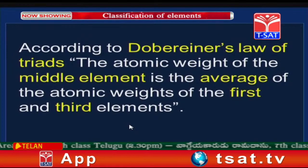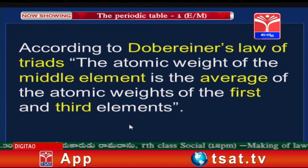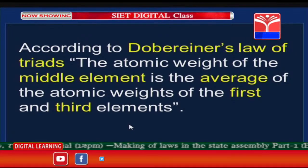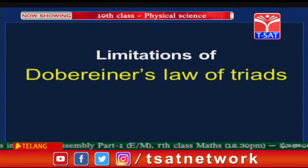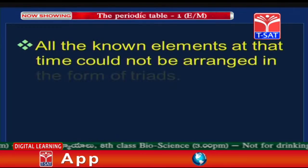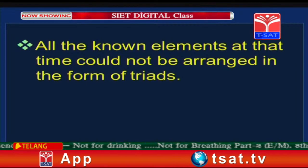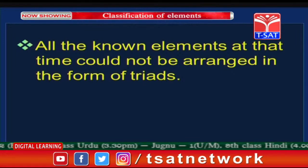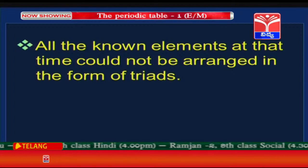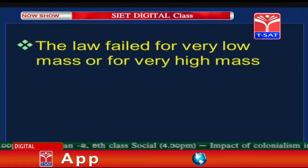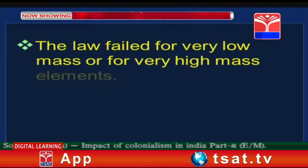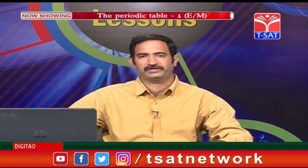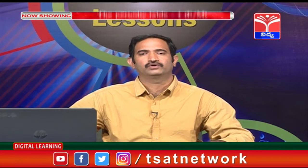According to Dobereiner's Law of Triads, the atomic weight of the middle element is the average of the atomic weights of the first and third elements. Limitations: not all known elements at that time could be arranged in the form of triads — that is the major disadvantage. The law also fails for elements of very low or very high atomic mass.